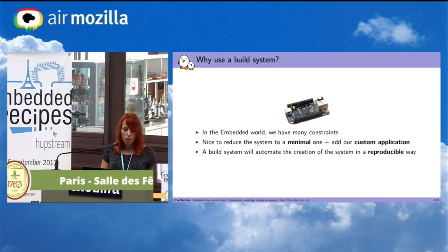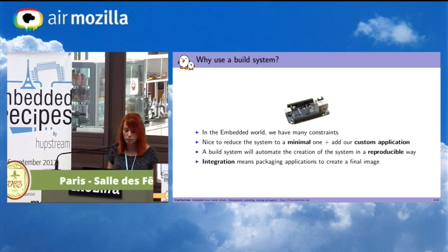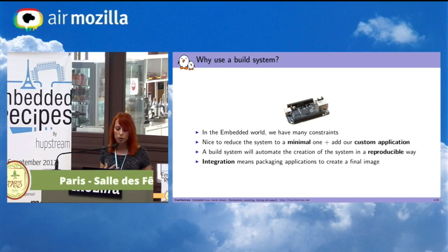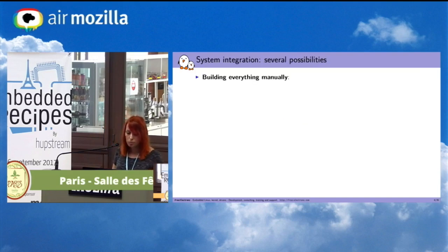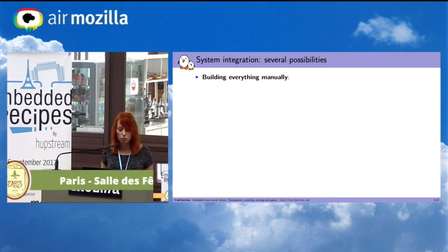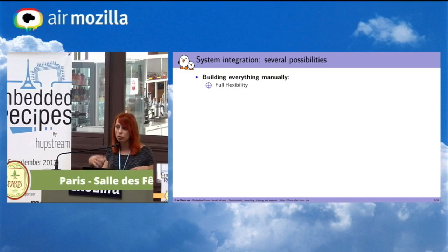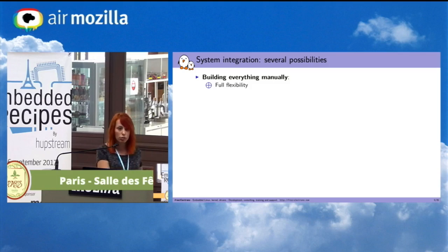A build system will automate the creation of the system in a reproducible way. Integration means packaging applications to create a final image. We have several possibilities with system integration. We can build everything manually, so you will have full flexibility, because you control each application you want in your final image that will flash on your board.